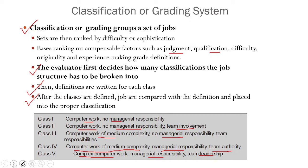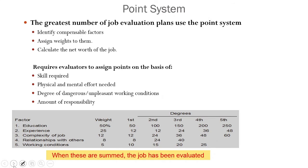Based on this classification, we can assign compensation values to each group of jobs, either based on what the market is paying or by evaluating new job types. For example, when the mobile industry emerged 20 years ago, jobs for creating software and apps for mobile technologies were entirely new. A classification system like this would have been used to evaluate what those jobs were worth before salary surveys became possible.